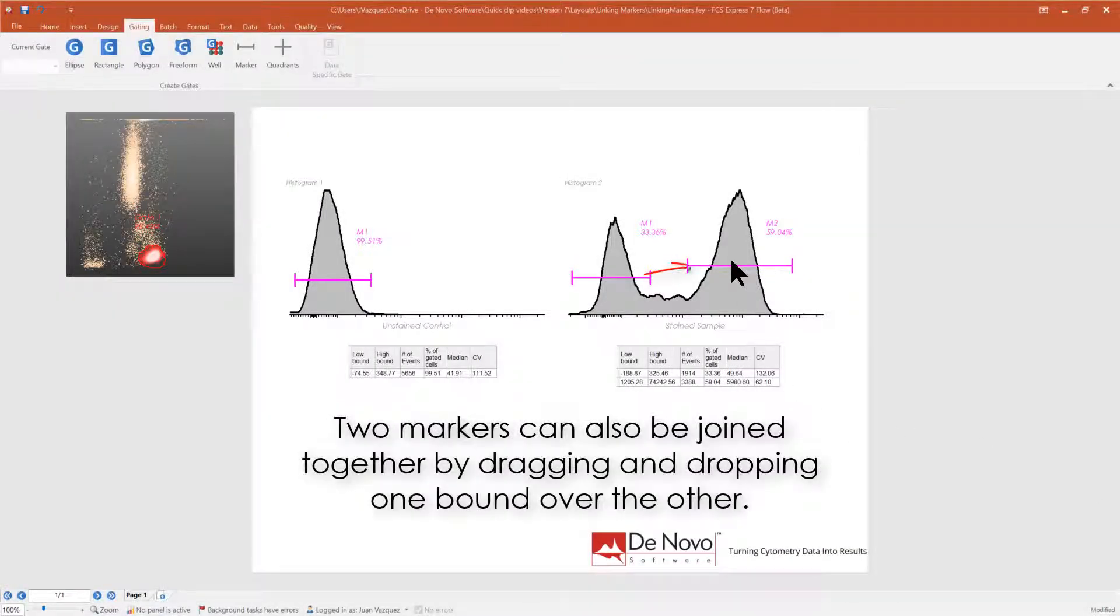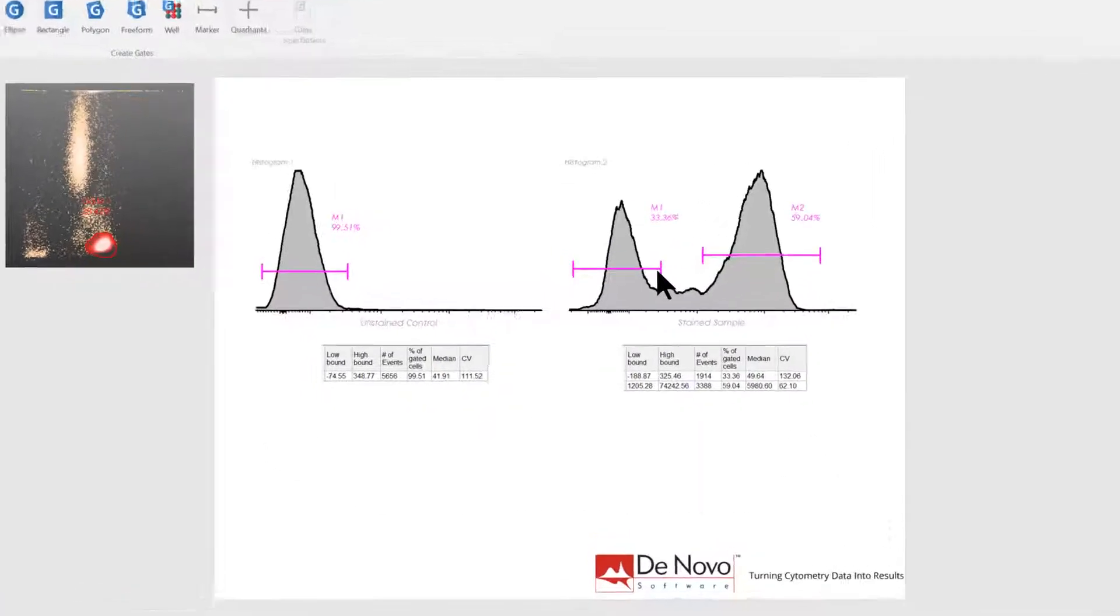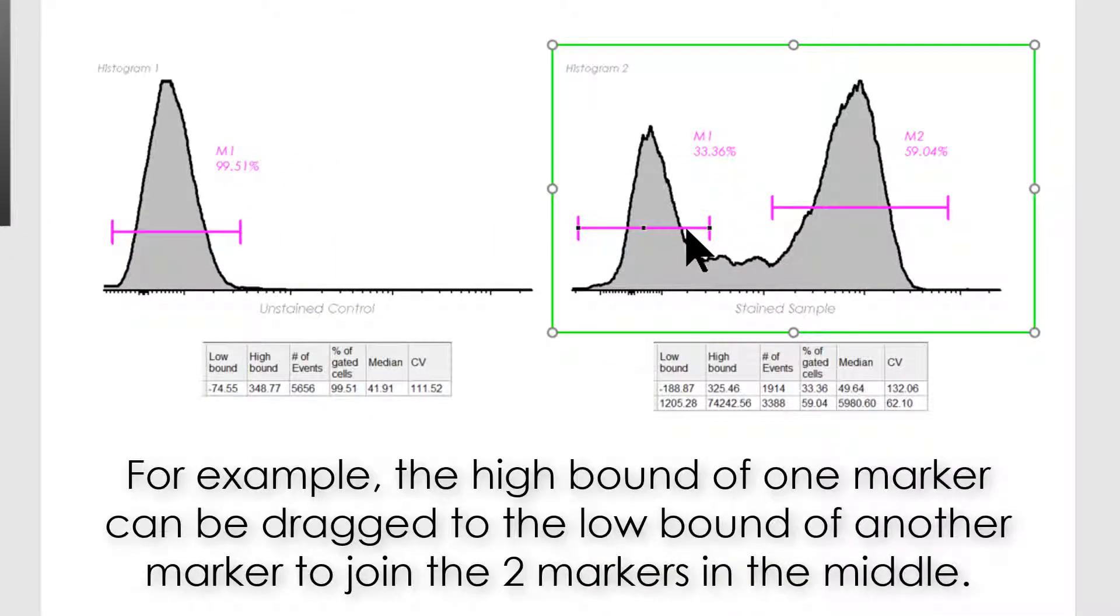Two markers can also be joined together by dragging and dropping one bound over the other. For example, the high bound of one marker can be dragged to the low bound of another marker to join the two markers in the middle.